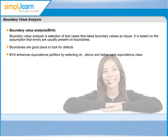Boundary Value is nothing but an input value or output value which is on the edge of an equivalence partition or at the smallest incremental distance on either side of an edge. For example, the minimum or maximum value of a range.